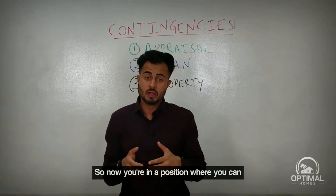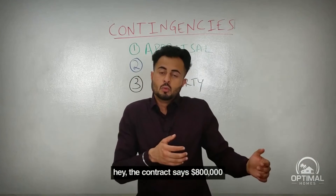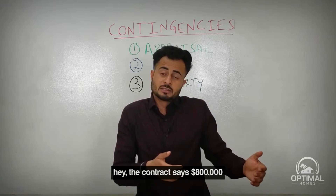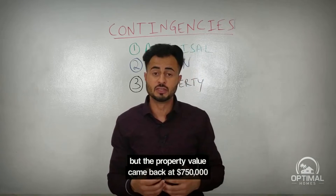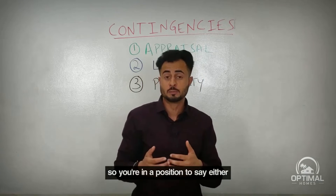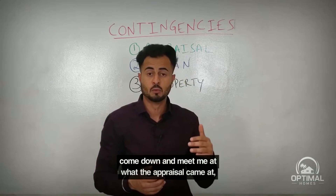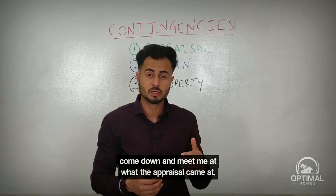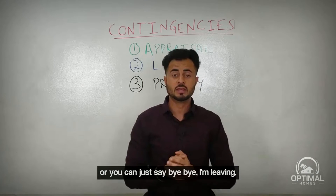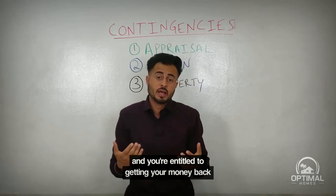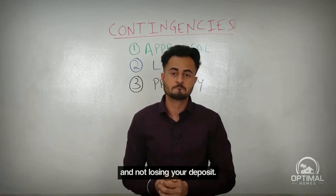You're now in a position where you can go back to the seller and say, 'The contract says $800,000, but the property value came back at $750,000.' So you can say either come down and meet me at what the appraisal came in at, or you can just say bye-bye — you're entitled to get your money back and not lose your deposit.